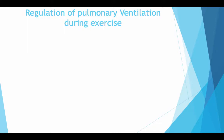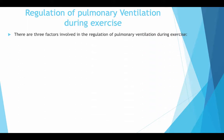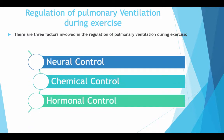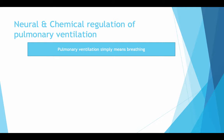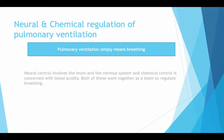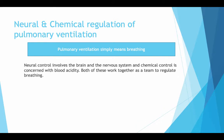Regulation of pulmonary ventilation during exercise: there are three factors involved — neural control, chemical control and hormonal control. Pulmonary ventilation simply means breathing. Neural and chemical regulation work together as a team: neural control involves the brain and nervous system, and chemical control is concerned with blood acidity.